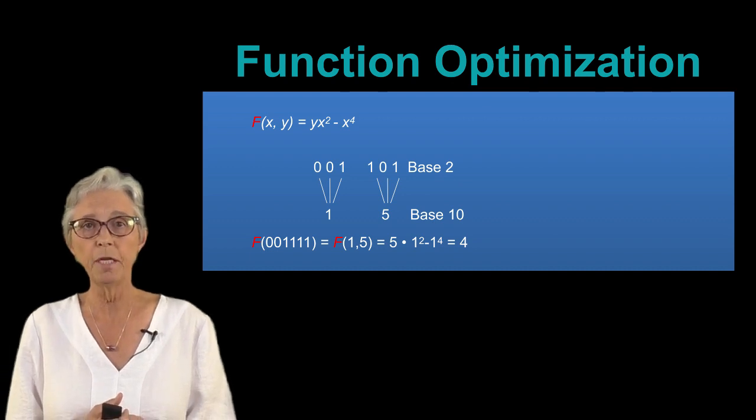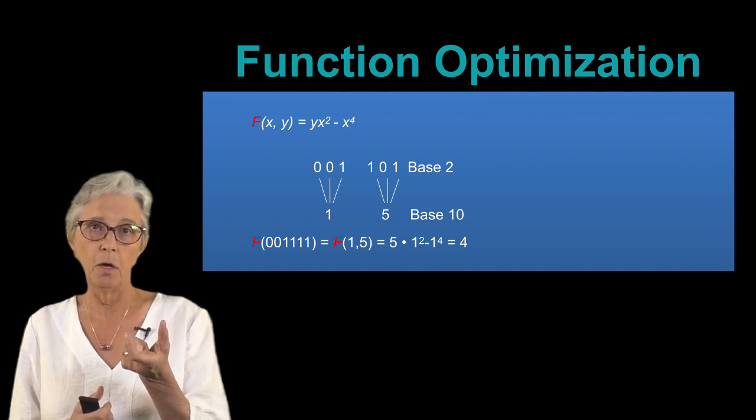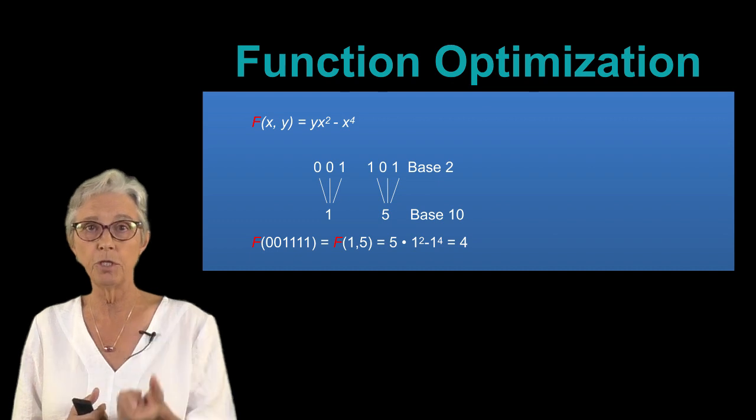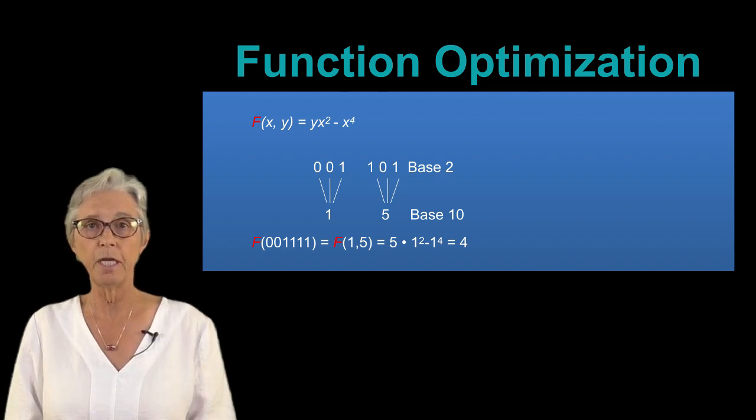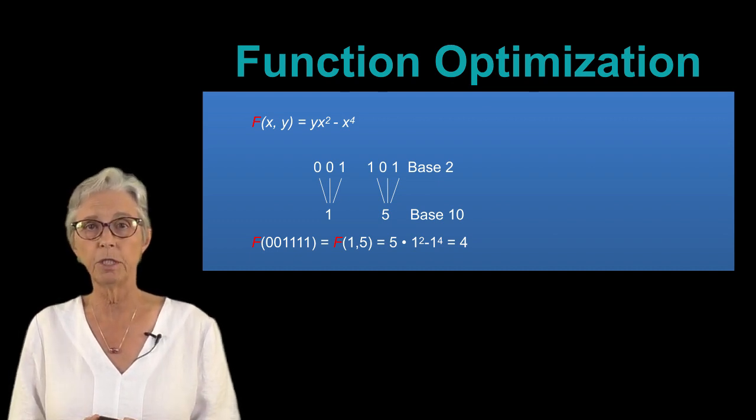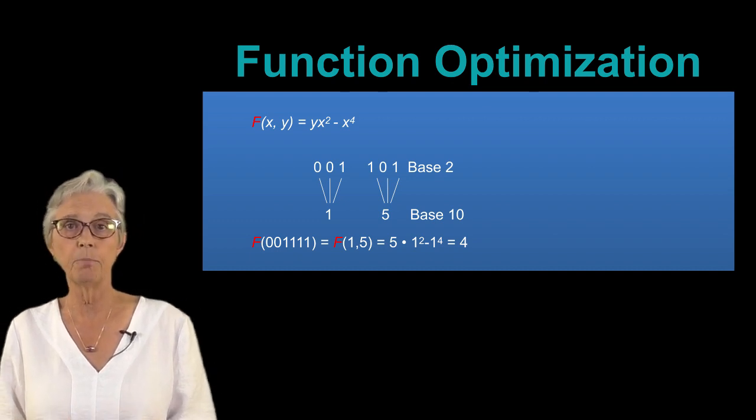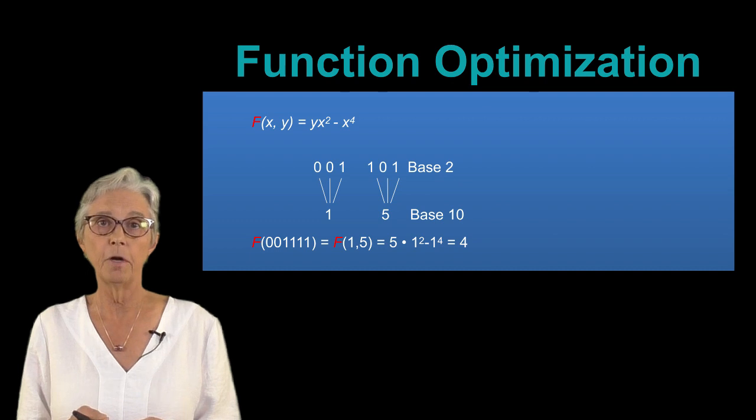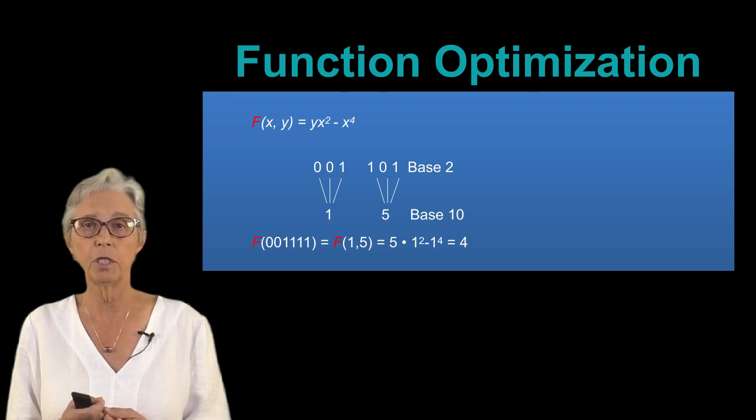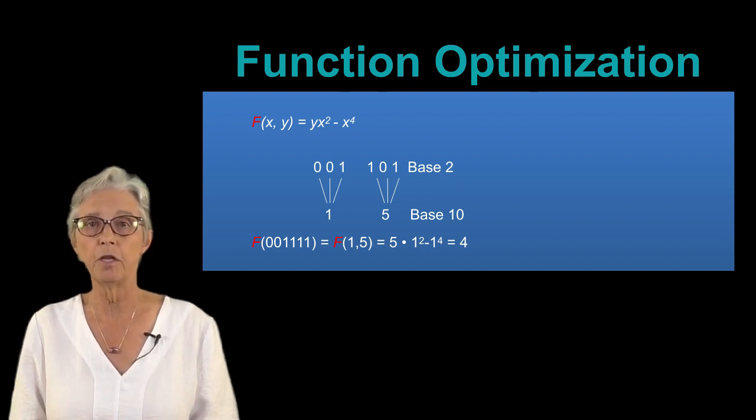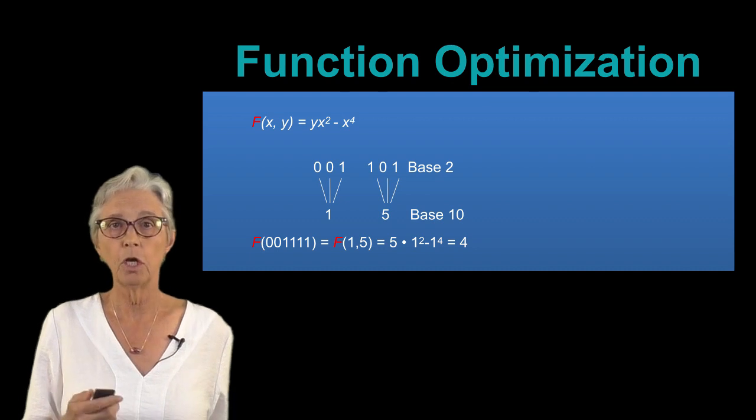Now to evaluate fitness, we then need to take these ones and zeros and interpret them as base two numbers, translating them into their decimal equivalence which is shown on the figure. Then take those decimal values and plug them into our function—our fitness function—and in this case we get the value 4. So we would have to do that for every individual in the population.